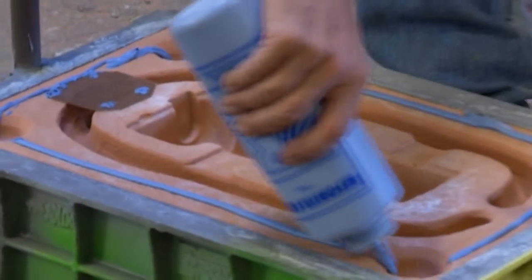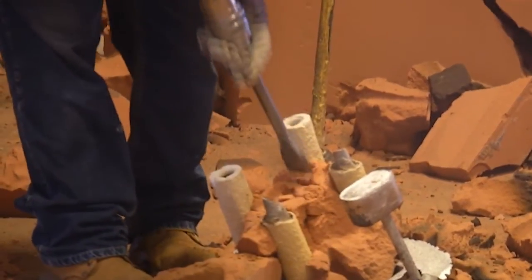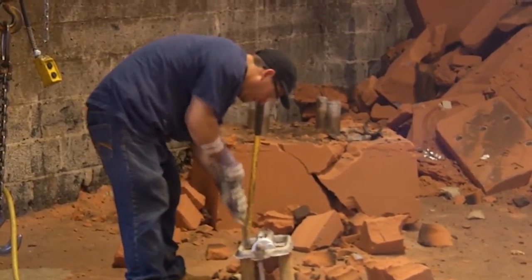Once the sand has been formed around the pattern to create a cope and drag, the sand molds are ready for metal casting. Molten metal is poured into the sand mold. After cooling, the sand is removed with vibratory machines or through hand processes. Sand blasting may be used to remove any residual sand trapped in the cast metal surface.